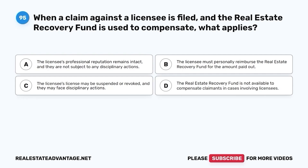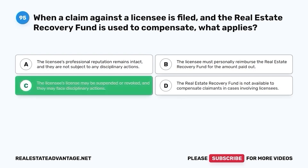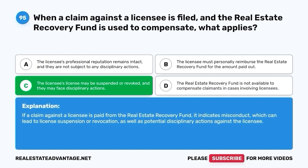Question 95. When a claim against a licensee is filed and the Real Estate Recovery Fund is used to compensate, what applies? A. The licensee's professional reputation remains intact and they are not subject to any disciplinary actions. B. The licensee must personally reimburse the Real Estate Recovery Fund for the amount paid out. C. The licensee's license may be suspended or revoked, and they may face disciplinary actions. If a claim against a licensee is paid from the Real Estate Recovery Fund, it indicates misconduct, which can lead to license suspension or revocation, as well as potential disciplinary actions.